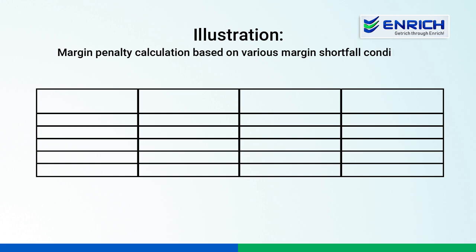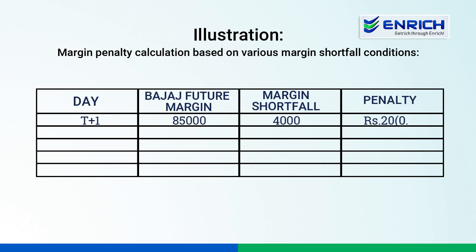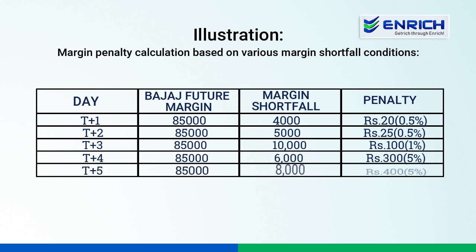Let's understand this with the help of an illustration. Looking at the chart: Bajaj Future margin is $85,000. On T+1 day, if the margin shortfall is $4,000, which is less than 10% of the applicable margin, the penalty would be 0.5% of $4,000. Likewise, on T+2 day, if the margin shortfall is $5,000, again less than 10% of the applicable margin, the penalty would be 0.5% of $5,000, which is $25. On T+3 day, if the shortfall is $10,000, which is 10% or more of the applicable margin, the penalty rises to 1% of shortfall — so 1% of $10,000 is ₹100. If the shortfall moves to the 4th and 5th day, the penalty percentage increases to 5%, as shown on the chart.